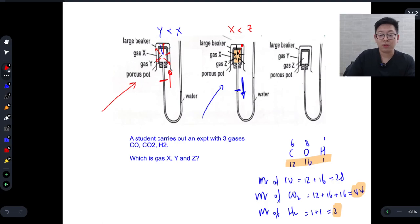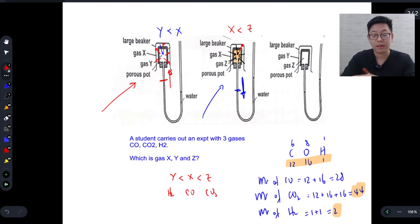Now if you put all of that together, Y has the smallest MR, followed by X, followed by Z. And that means Y is hydrogen gas, X will be 28 carbon monoxide, and Z is carbon dioxide.